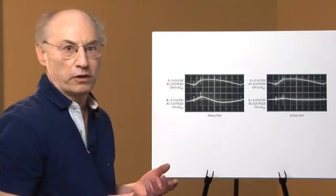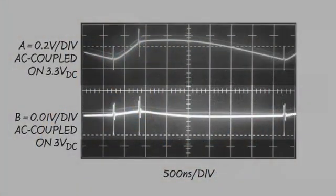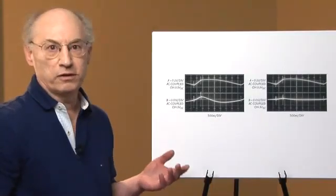If we increase the value of the output filter capacitor, we flatten out the ripple, but the spikes pretty much stay the same. How do we get rid of these things?